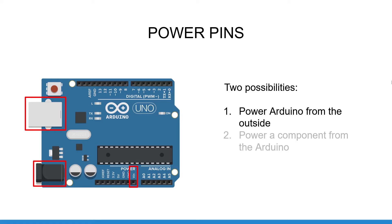For the first possibility — powering the Arduino Uno board — you have different options. The first one is simply to connect your Arduino board to your computer using a USB cable; usually you get one included when you order an Arduino board. You can also use the DC power jack to power your Arduino board with 7 to 12 volts. If you are using some hobby servo motors powered by your Arduino, for example, you might want to use the DC power jack, as the power coming from the USB cable is lower.